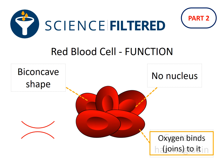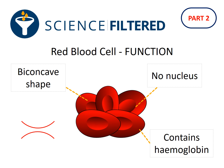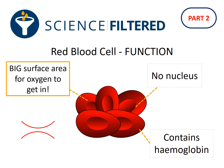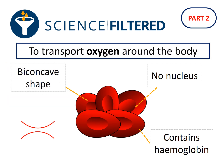And the biconcave shape — the shape where the red blood cell is squished from top and bottom — means that the red blood cell has a very big surface area for the oxygen to get into. So these three things are going to help the red blood cell carry out its function, which is to transport oxygen around the body.